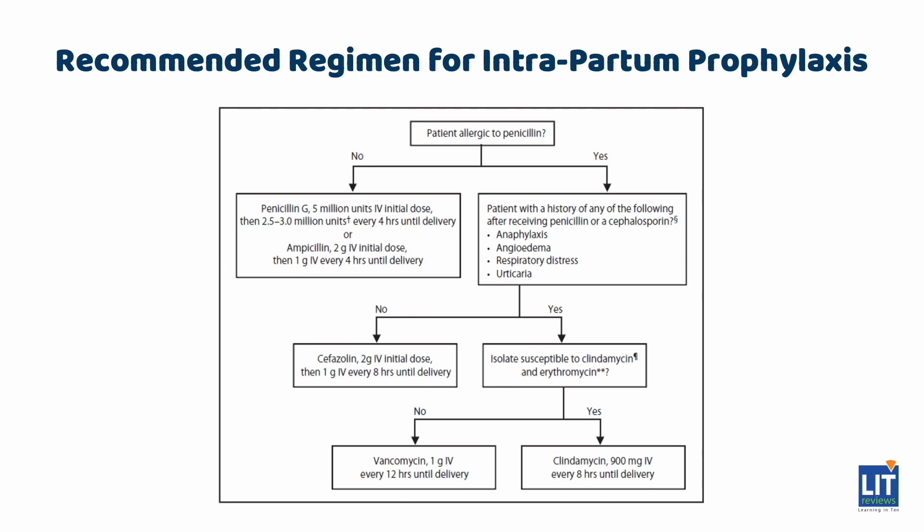Penicillin remains the agent of choice for intrapartum antibiotic prophylaxis, with ampicillin as an acceptable alternative. Penicillin-allergic women without a history of anaphylaxis, angioedema, respiratory distress, or urticaria following penicillin or cephalosporin should receive cefazolin. Antimicrobial susceptibility testing should be ordered for antenatal GBS cultures in penicillin-allergic women at high risk for anaphylaxis, and clinicians must inform laboratories of this need. Penicillin-allergic women at high risk for anaphylaxis should receive clindamycin if their GBS isolate is susceptible to clindamycin and erythromycin as determined by susceptibility testing.